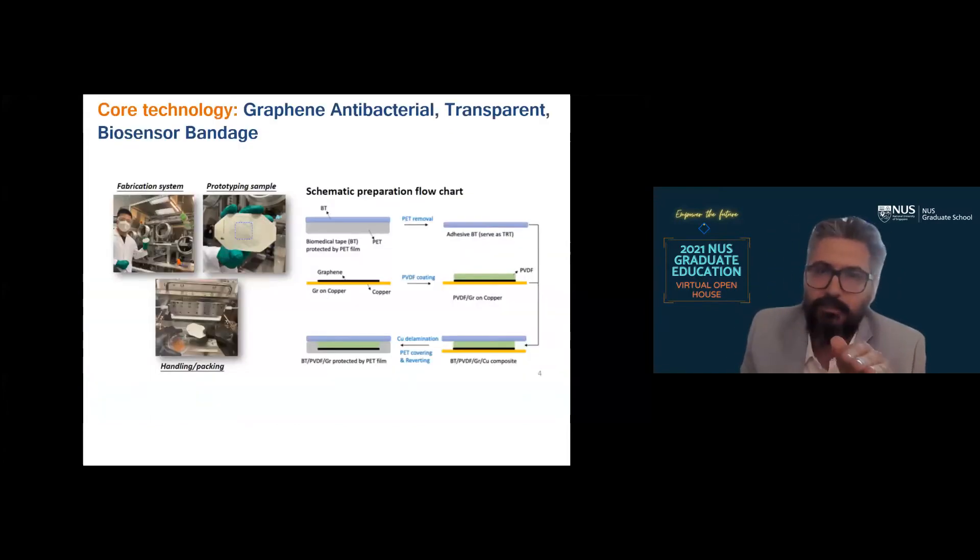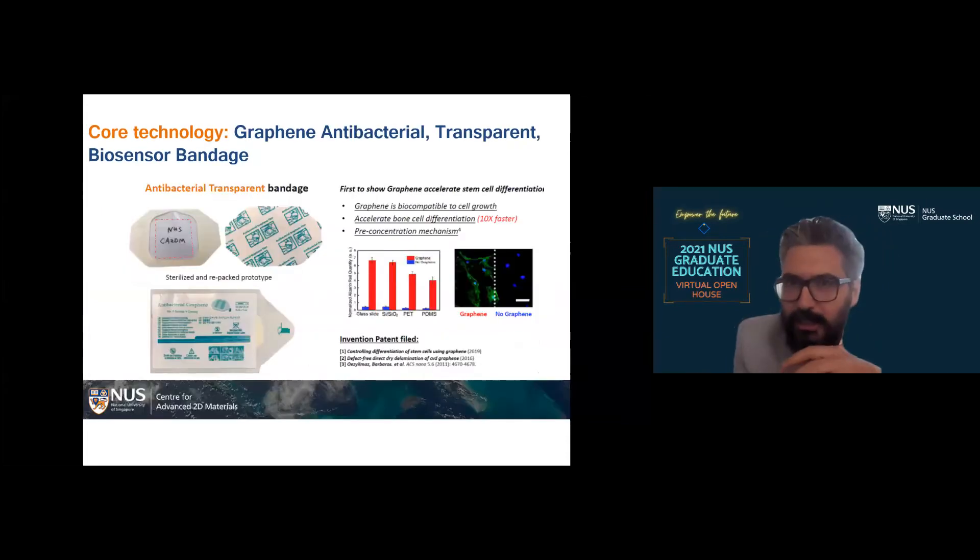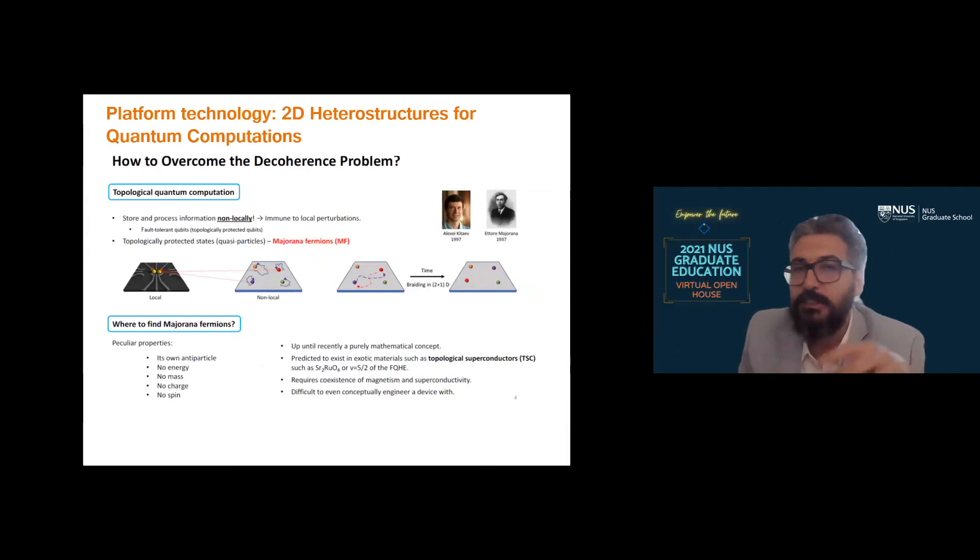The biosensor bandage with graphene relies on another type of engineering graphene where you make graphene highly conductive. That property of graphene allows you to make sensors out of it, but it also acts as an antibacterial coating. Surprisingly, this type of graphene seems to lead to stem cell differentiation, which could increase or accelerate wound healing. This is, of course, done in collaboration with other colleagues at NUS who are experts in that type of research. We are not doing this part, but we are collaborating, that's really important.